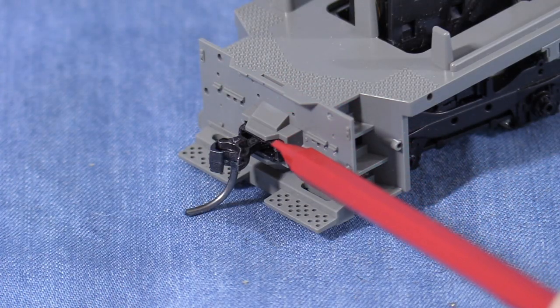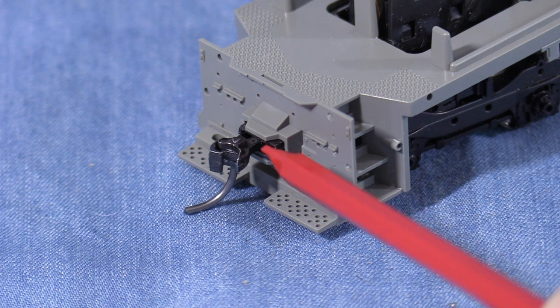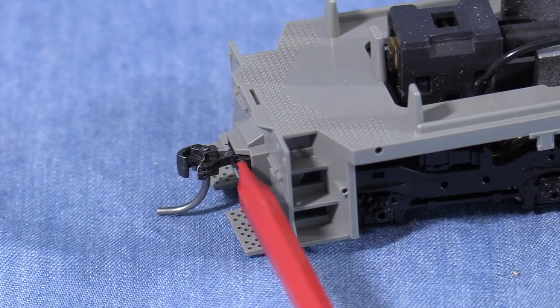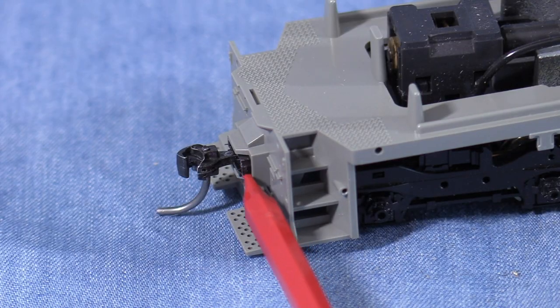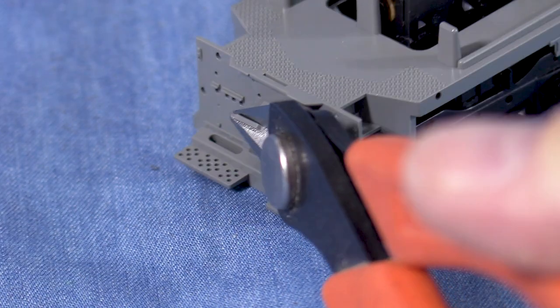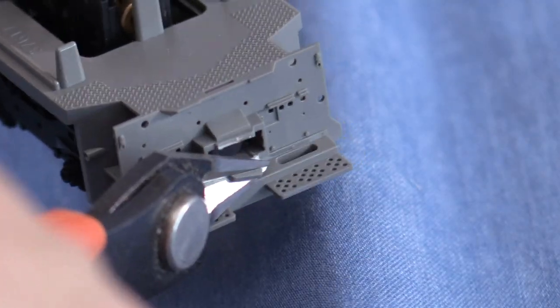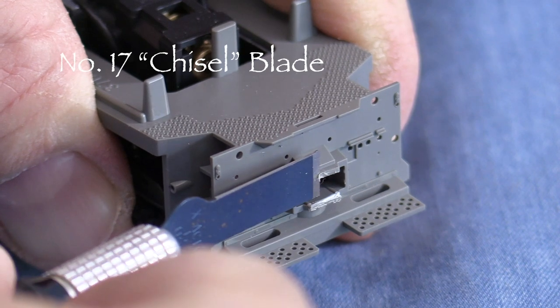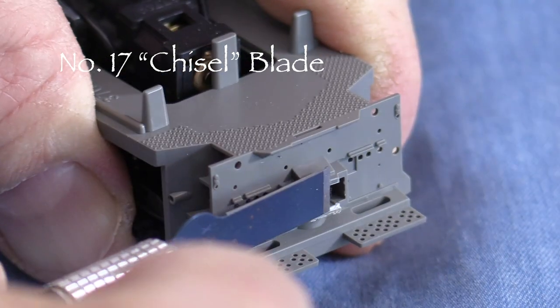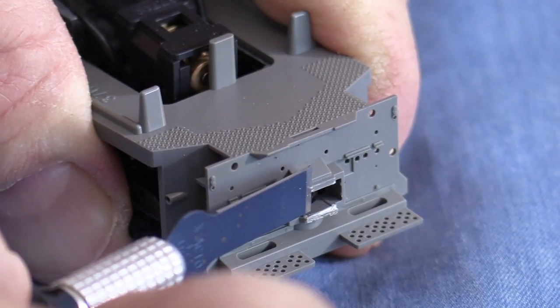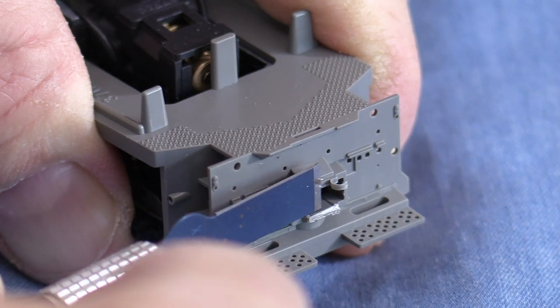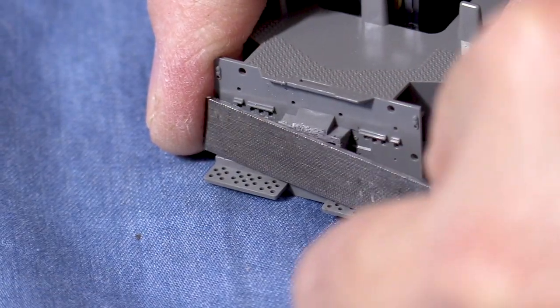On the stock pilot, the coupler box has an extended trapezoid shape that bears no resemblance to anything I've ever seen on a real EMD diesel. Let's get rid of that. I'll start by clipping the part with some sprue cutters. Then I'll use a number 17 blade and a hobby knife to shave off excess material. I'll finish the shortened coupler box opening with a file.